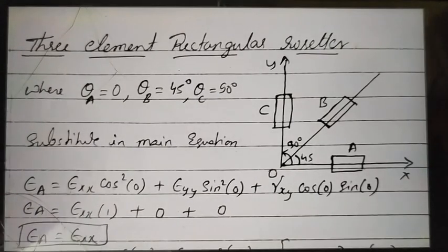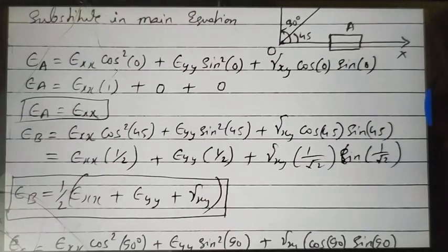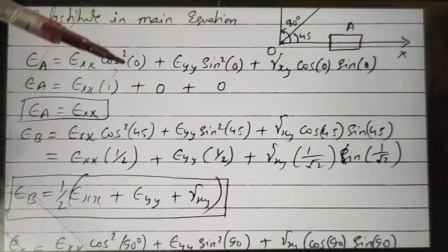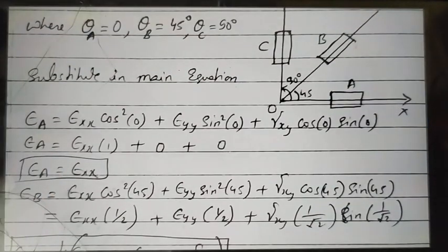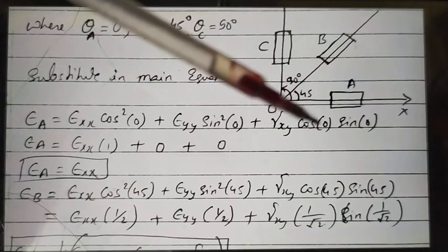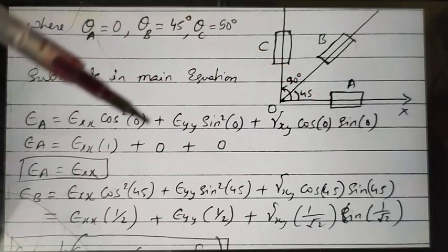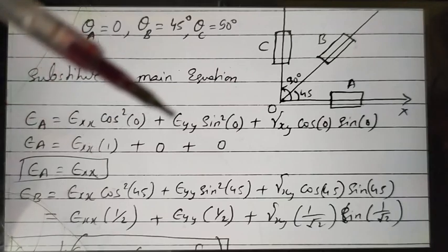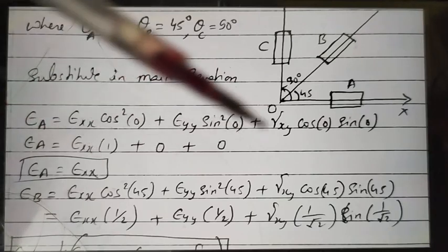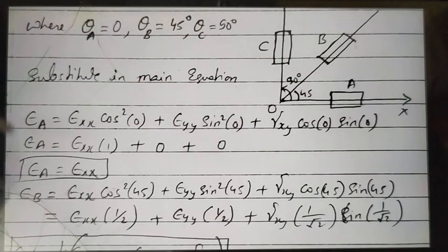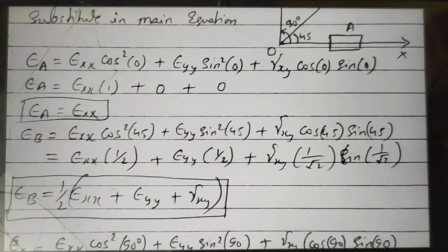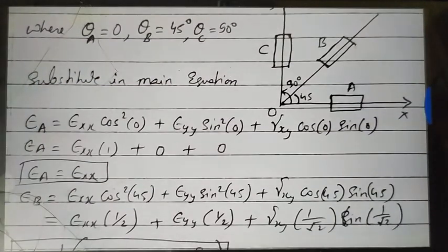Using the same approach as before, we substitute theta_a equal to zero into the main equation: cos²(0) equals one, sin(0) equals zero, giving epsilon_a equals epsilon_xx. Next, we substitute theta_b equal to 45 degrees into the equation.